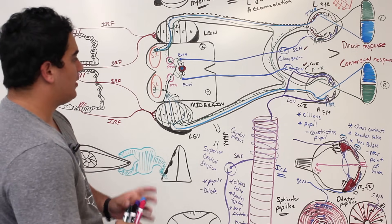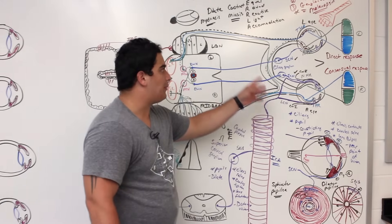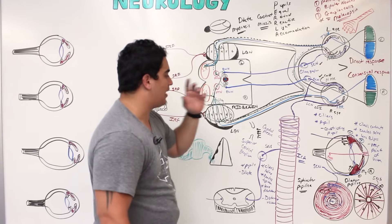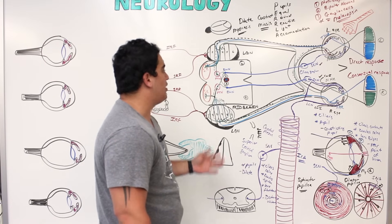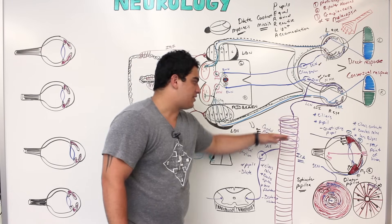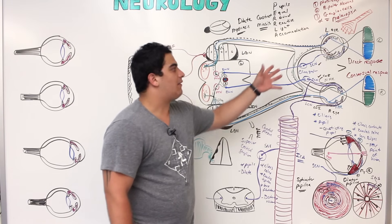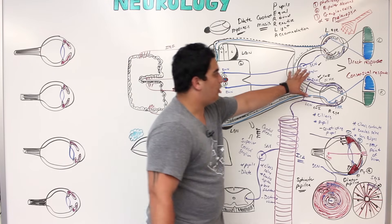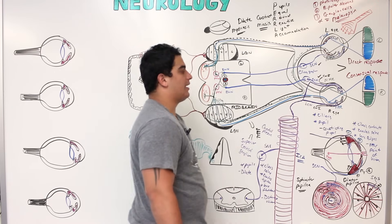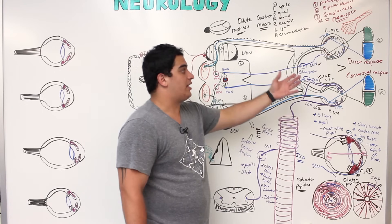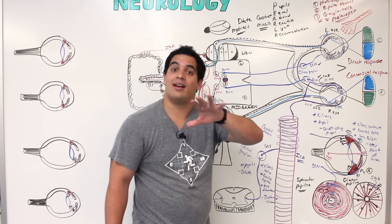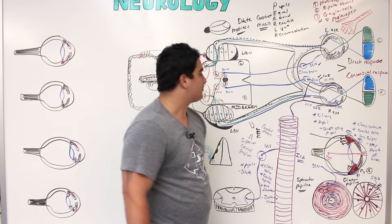We've covered the sympathetic and parasympathetic supply to the eye, the pupillary light reflex, and accommodation. When the direct or consensual response is absent, it may indicate damage to the parasympathetic or sympathetic fibers, warranting further testing.